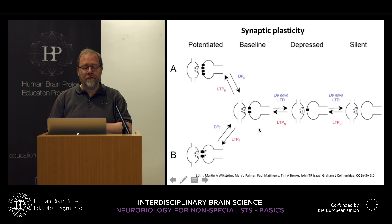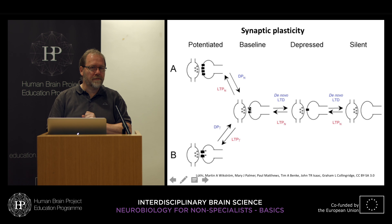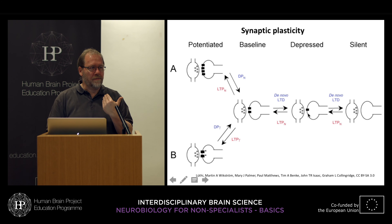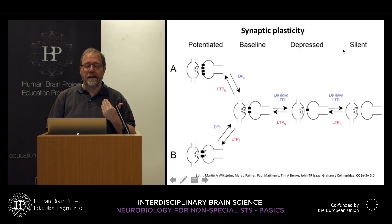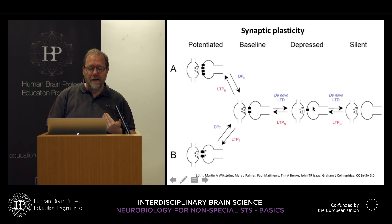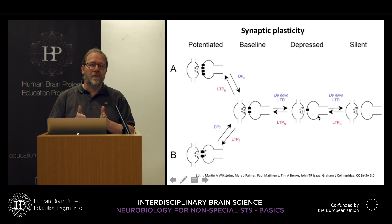On the other hand, if we do not use a synapse, it can be down-regulated. Parts of the synapse can be moved to other synapses which are more heavily used, and what we end up with is what's called long-term depression. If it goes on, it can even lead to silencing and retraction of synapses. This process is as important as long-term potentiation in terms of learning.